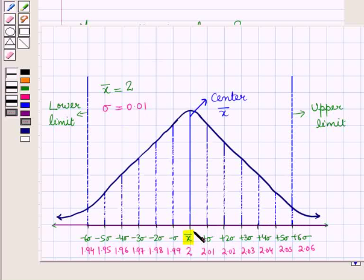On right side of the mean, we have marked the values as x bar plus sigma, x bar plus 2 sigma, x bar plus 3 sigma, x bar plus 4 sigma, x bar plus 5 sigma.